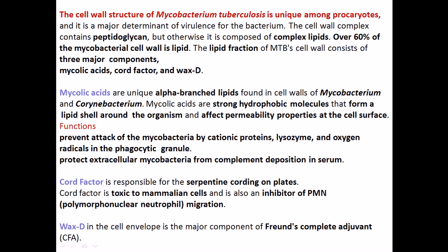Let's talk in detail about the lipid structure. The cell wall of Mycobacterium is over 60% lipid. Among the lipid structures, there are three important components: first is mycolic acid, second is chord factor, and third is wax D — all three are lipids.